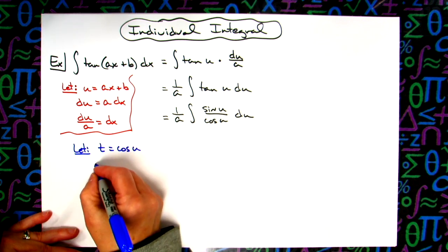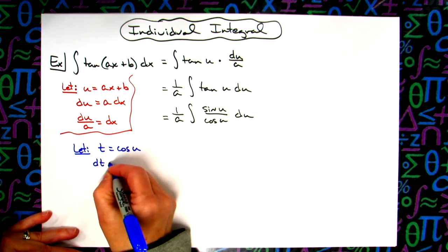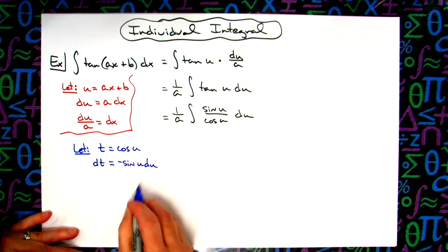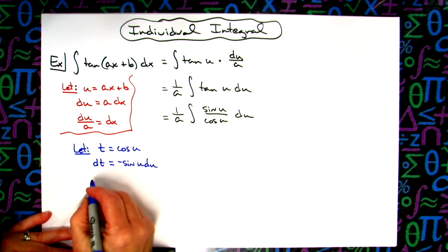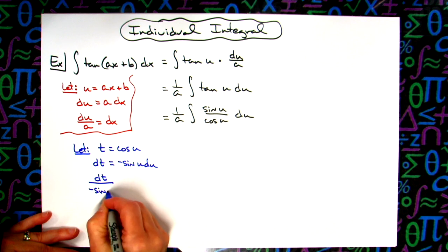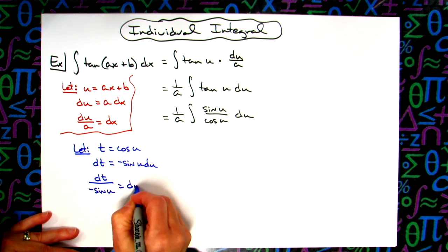Taking the derivative of both sides, we have dt equals negative sine u du. Solving for du, we have dt over negative sine u equals du.